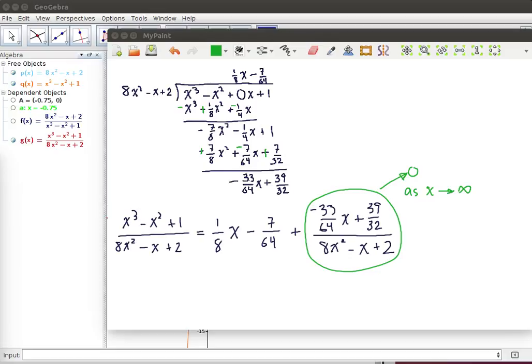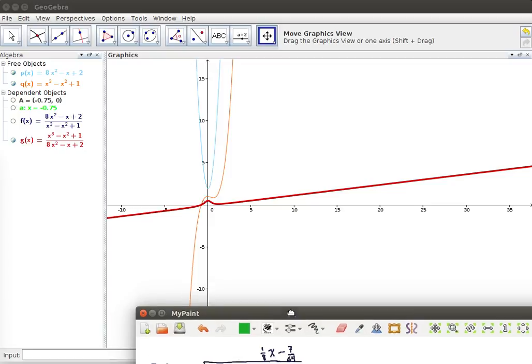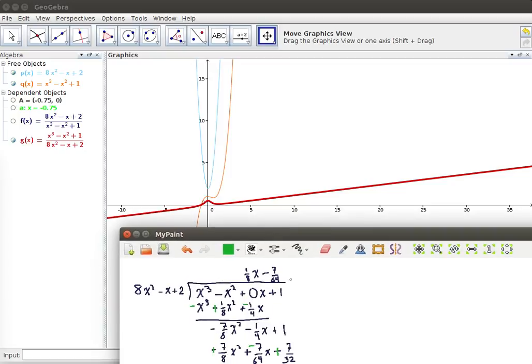Now that's what we're seeing in the graph. Move this out of the way. You see, as x gets very, very large, this particular amount gets closer and closer to that 1/8 x - 7/64.